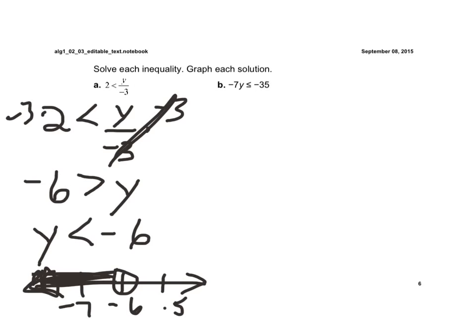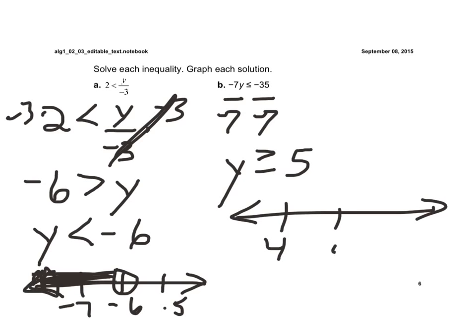On letter B here, we're going to divide both sides by negative 7 to get y by itself. And again, I must reverse that inequality sign. And I have y is greater than or equal to positive 5. And I go 4, 5, and 6. Again, it's closed because it includes 5, and then greater than is to the right.